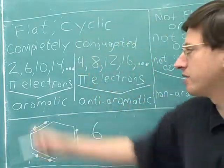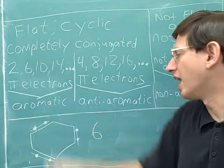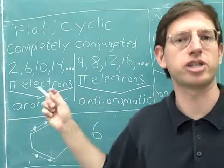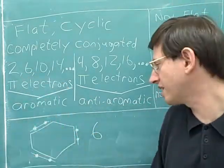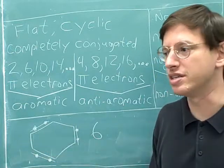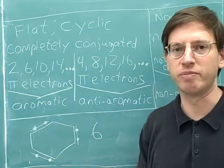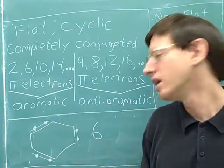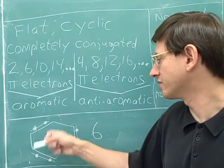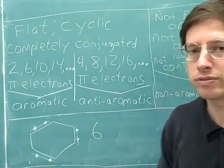Six pi electrons falls into the aromatic list, so this molecule is aromatic. Of course, you should already have known this — this is benzene, the most famous example of an aromatic compound. But now we've confirmed that benzene is truly aromatic using Hückel's Rule.